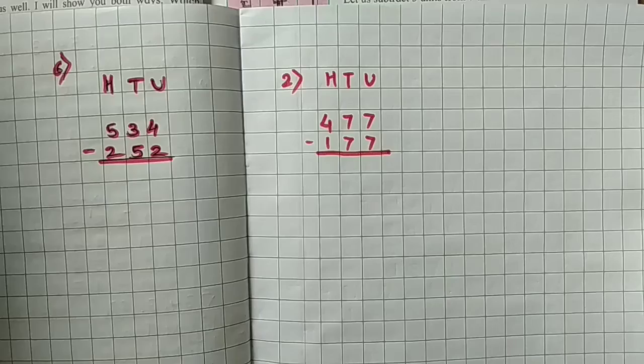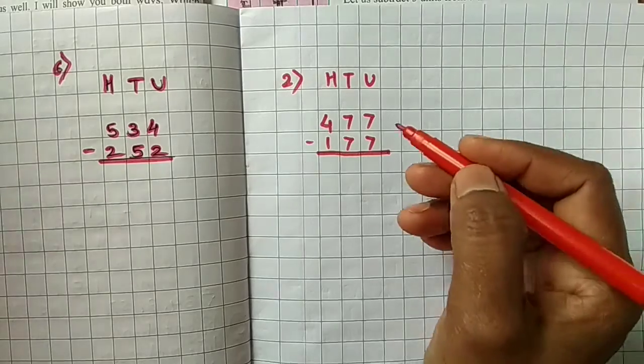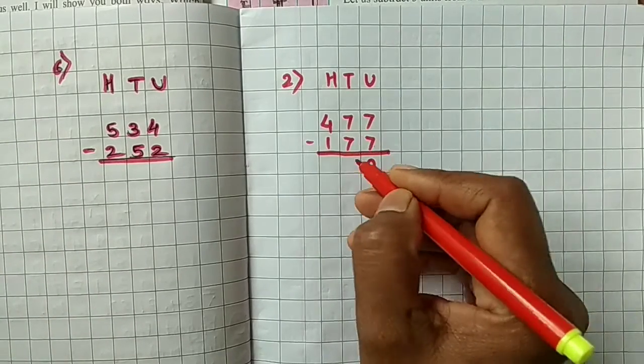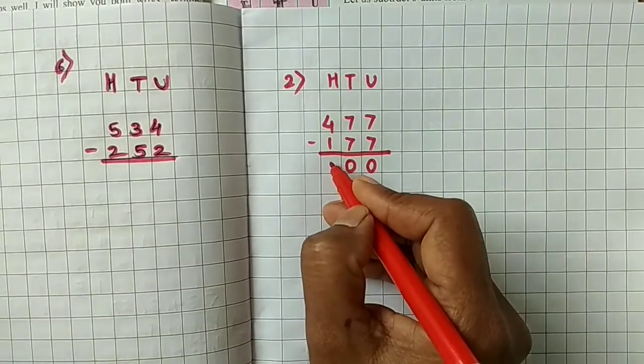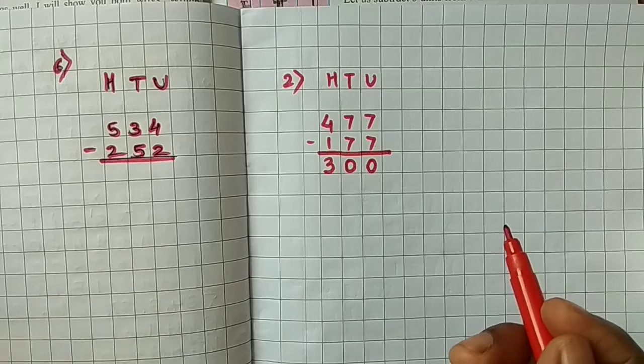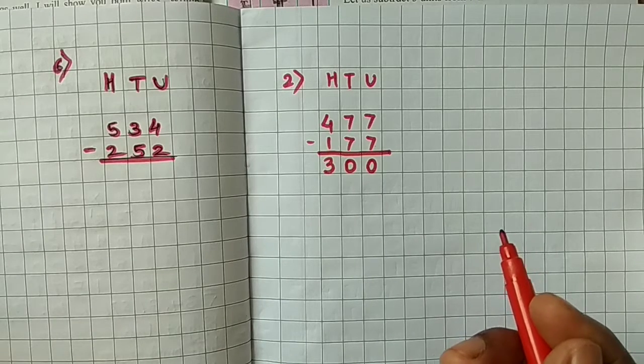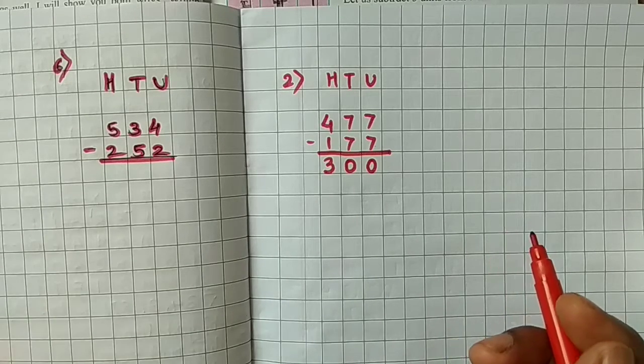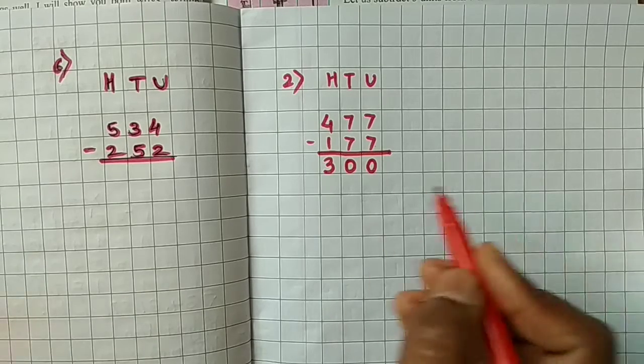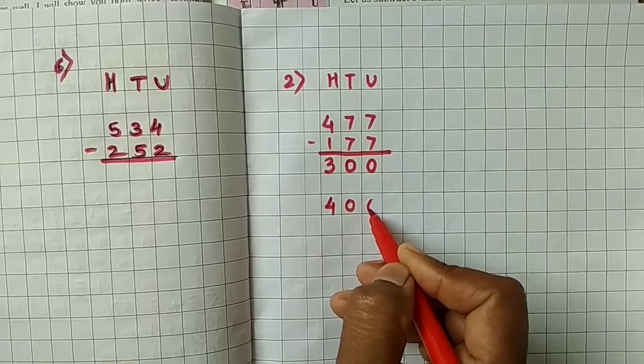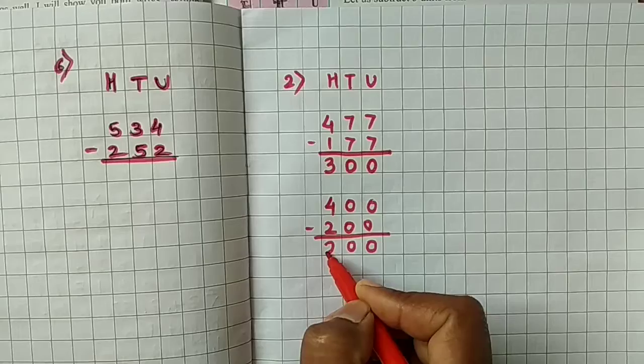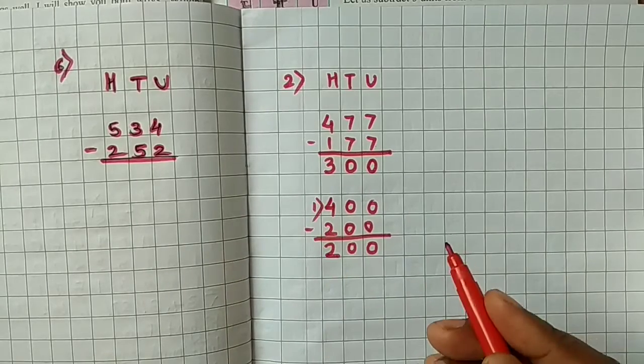Let's solve. Now we are solving this example: 7 minus 7 we get as 0, 7 minus 7 we get as 0, and 4 minus 1 we get as 3. Now we are writing 3 subtraction examples and this example answer is 200. For example, 400 minus 200, this answer is 200. So this is first example.